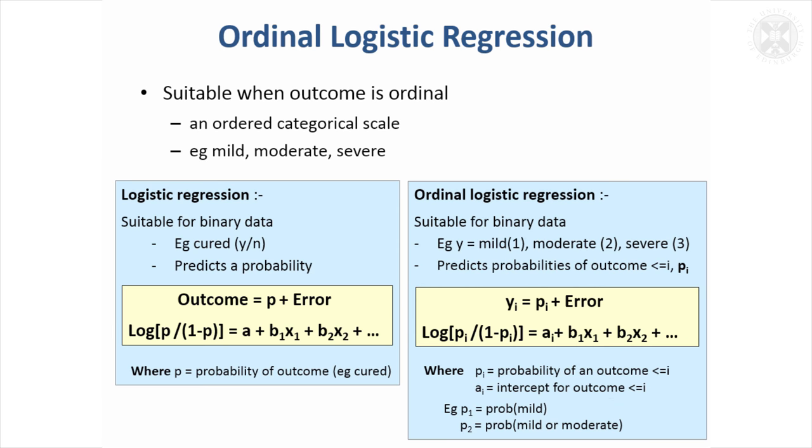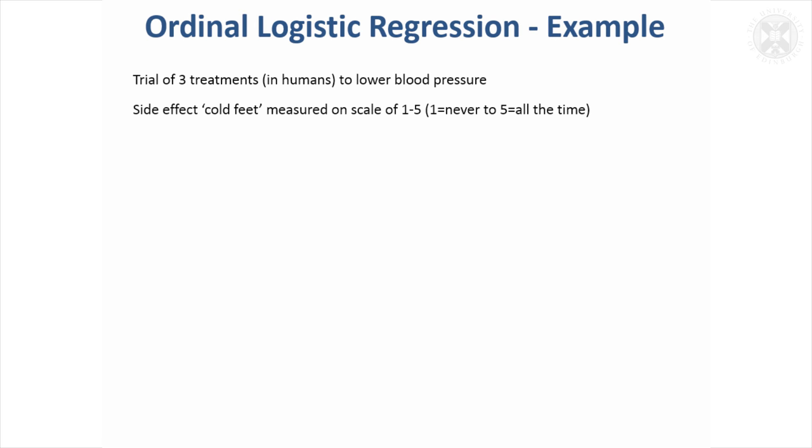A bit to get your head around, but the model has the same format with different intercepts for different partitions of the ordinal categories. We're not really interested in those intercepts but in the parameters we're actually fitting in the model. By allowing different intercepts, we can model ordinal data. We'll now apply this to an example.